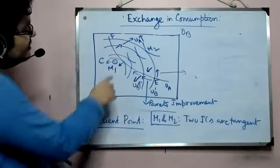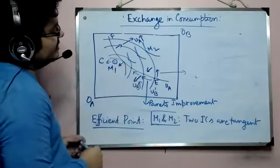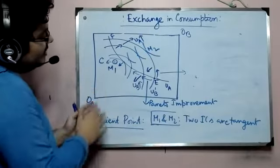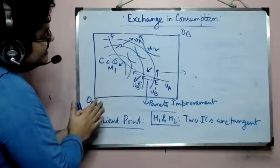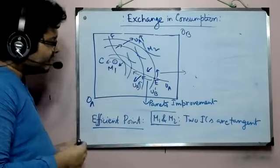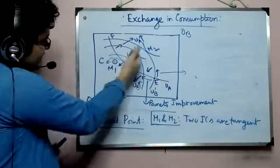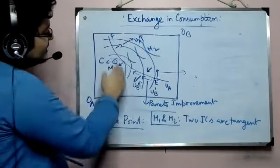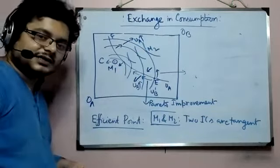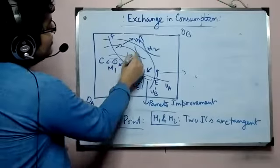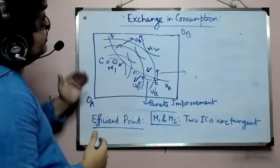To sum up: we started from an initial endowment and saw that the core of an exchange economy gives us the room within which we can have Pareto improvement. The border points are characterized by M1 and M2, where the two ICs become tangent. M1 is the solution of maximizing B's utility given A's utility. Within the core, there are several other points where this tangency criterion is also satisfied.